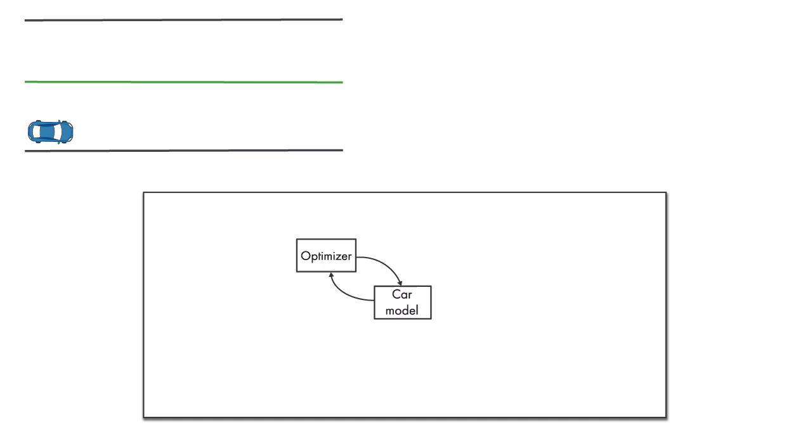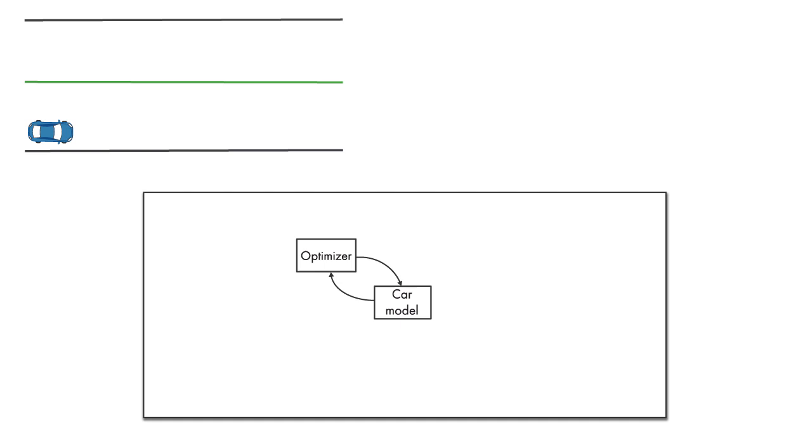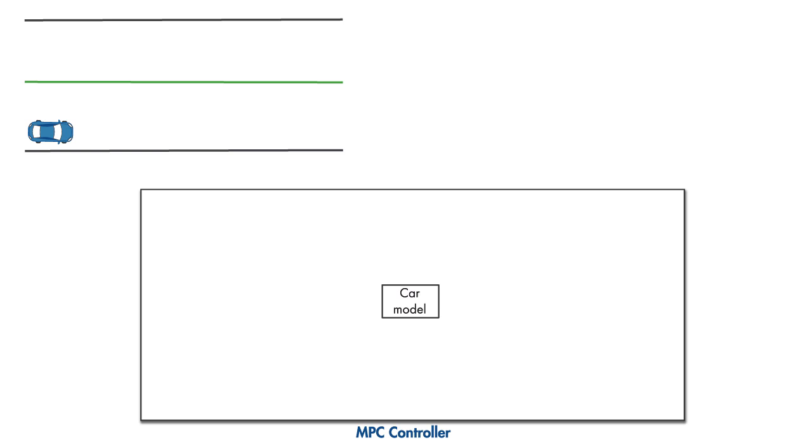We'll first focus on how the controller uses the car model, and later we'll discuss the optimizer. Let's use this plot to show the lateral position of the car. The vertical axis reflects the current time. Anything behind it reflects the past, and values to the right of it show the future.